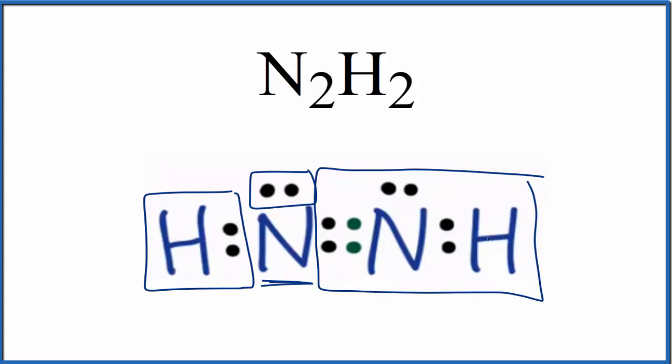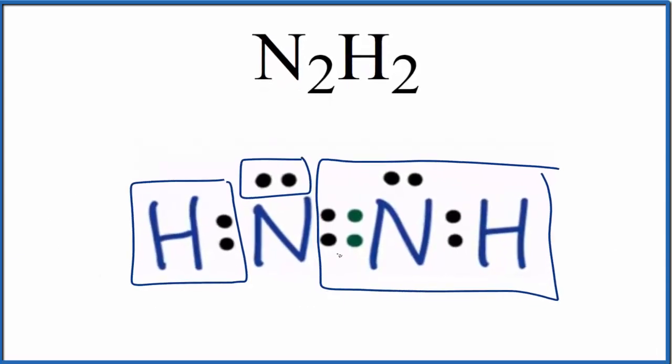If you use the AXE notation: A, that's the central nitrogen. So AX, that's the number of atoms or number of kind of things attached. We have a hydrogen here and then we have this whole group here, so we have two things attached to this.